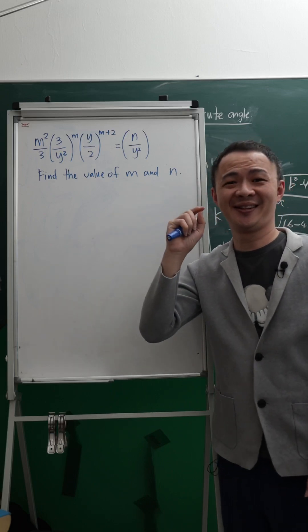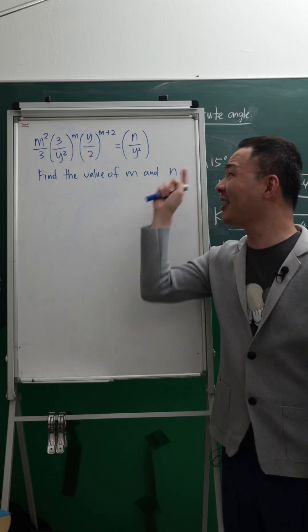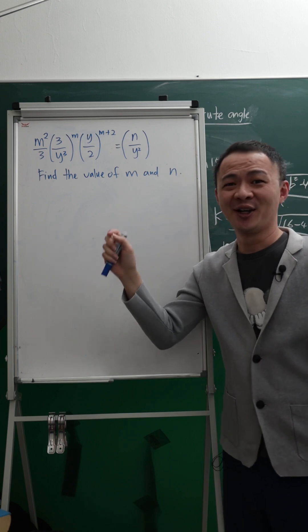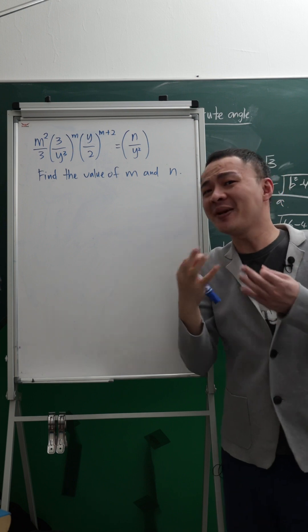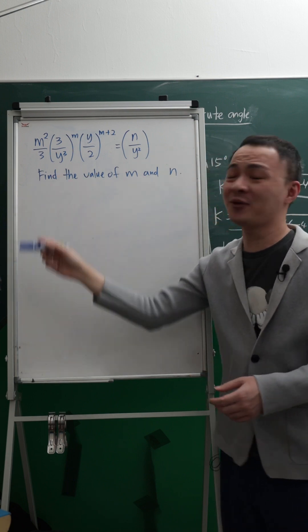This is a very challenging indices question. If you see carefully on this question, you realize you will see so many unknowns there, which is M, Y, and N. There's so many unknowns here, and you only have one equation.